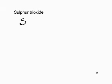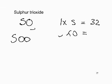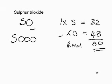Sulfur trioxide, SO₃: one sulfur contributing 32, and three oxygens each at 16 giving 48. Total RMM of sulfur trioxide: 80.